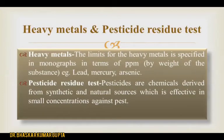The next parameter is heavy metals and pesticide residue test. The limit for heavy metals is specified in monographs in terms of ppm by weight of the substance — for example, lead, mercury, and arsenic. Pesticides are chemicals derived from synthesis and natural sources which are effective in small concentrations against pests.